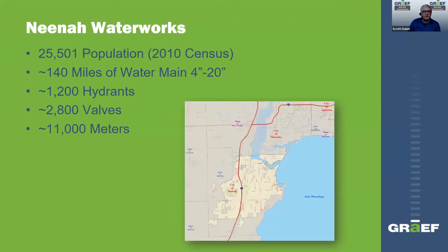Neenah Water Works serves about 25,500 in population. There's 140 miles of water main that varies from 4 inch to 20 inch. There are about 1,200 hydrants, approximately 2,000 mainline valves, and over 11,000 water meters.